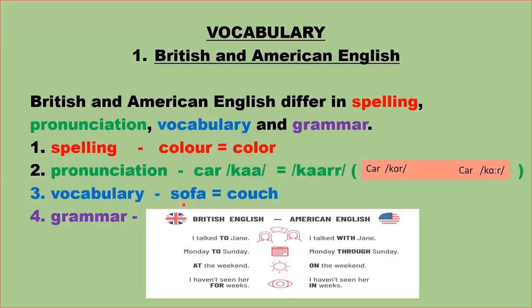The vocabulary also differs. In British English they say 'sofa', while in American English they call it 'couch'. Grammatical differences are also present: 'I talked to Jane' in British English versus 'I talked with Jane' in American English; 'Monday to Sunday' versus 'Monday through Sunday'; 'at the weekend' versus 'on the weekend'; 'I haven't seen her for three weeks' versus 'I haven't seen her in weeks.' These are some of the differences.